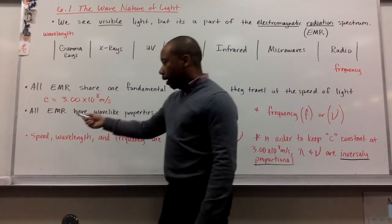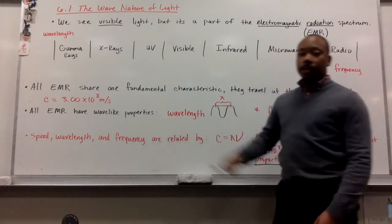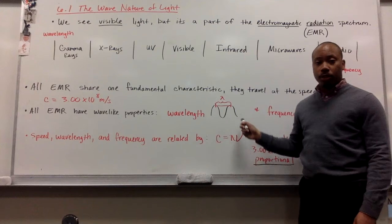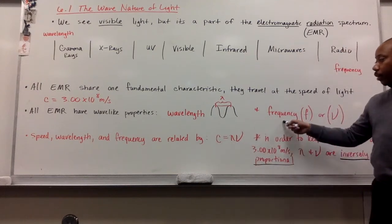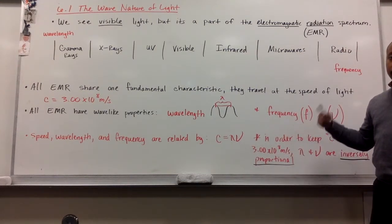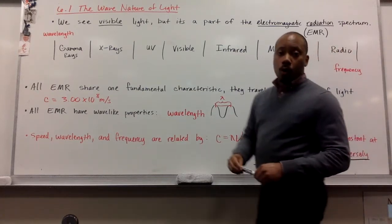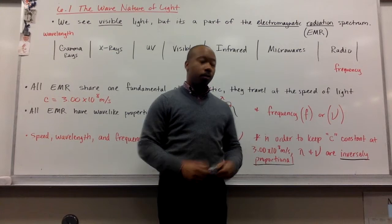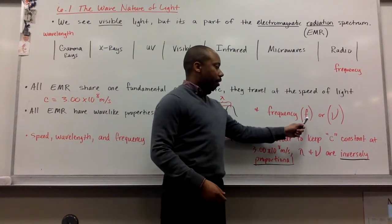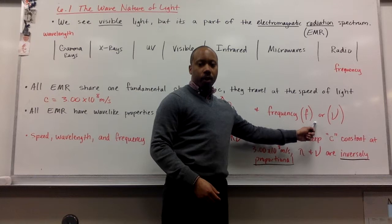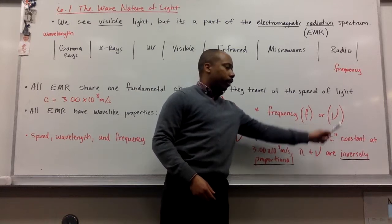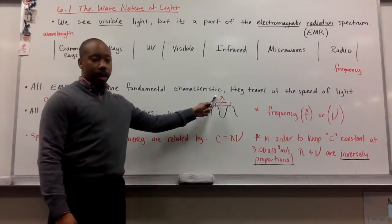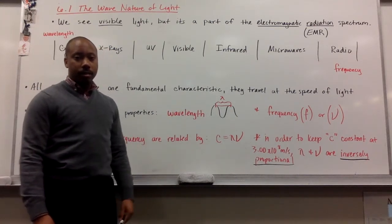All EMR have wave-like properties, meaning they have a wavelength, which is the distance from crest to crest or node to node of a wave, and they have frequency. The frequency is the amount of cycles or waves per second that pass a certain point. The frequency is noted by nu, and wavelength is given by lambda.